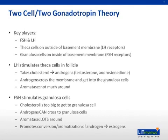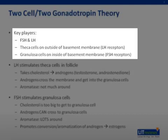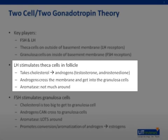No one is entirely clear what starts the PCOS process, but in order to understand how PCOS may come about, we need to talk about the two-cell and two-gonadotropin theory. The key players are follicle stimulating hormone FSH and luteinizing hormone LH, which are released from the gonadotropes in the anterior pituitary of the brain. Imagine a sphere-shaped follicle with an outside cell layer and an inside cell layer, with a basement membrane in between. The cells on the outside are the theca cells, which have LH receptors. There's also another layer of cells on the inside called granulosa cells, which have FSH receptors. LH stimulates the theca cells, which respond by taking cholesterol and converting it to androgens, specifically testosterone and androstenedione.